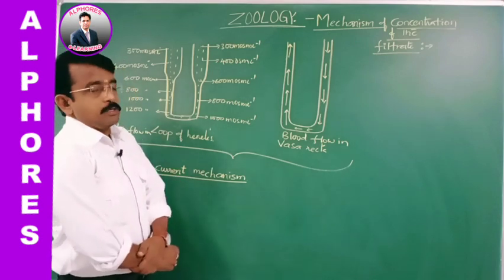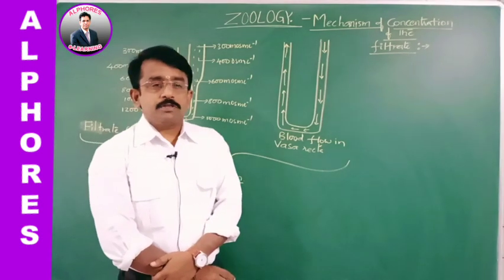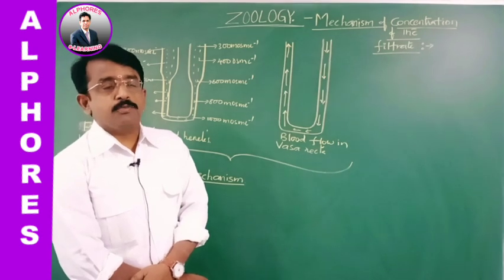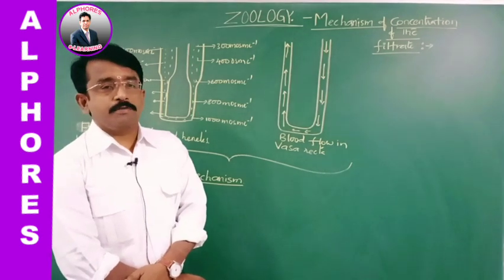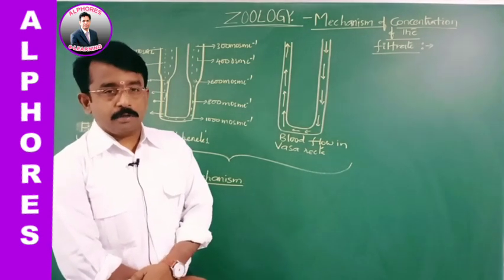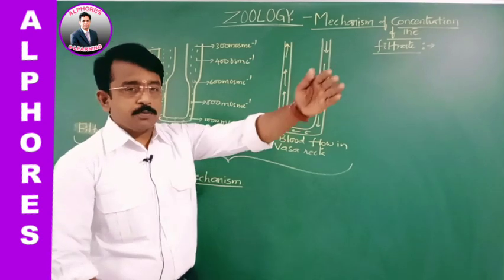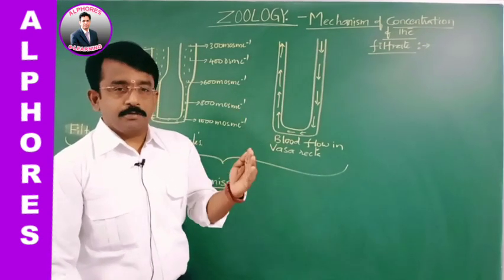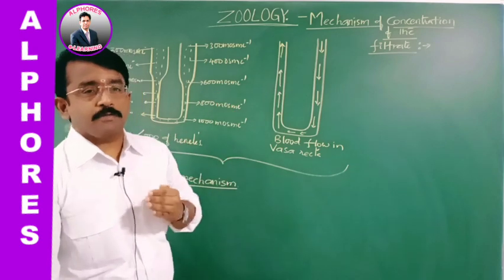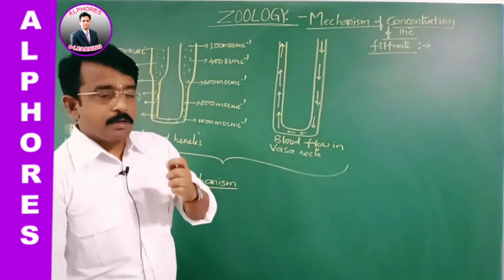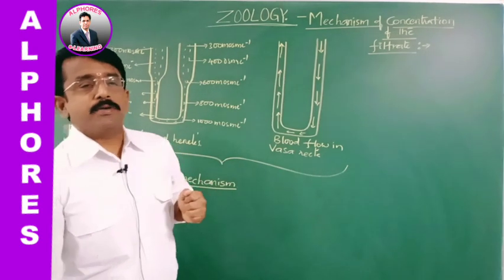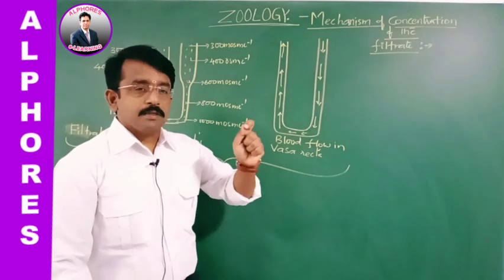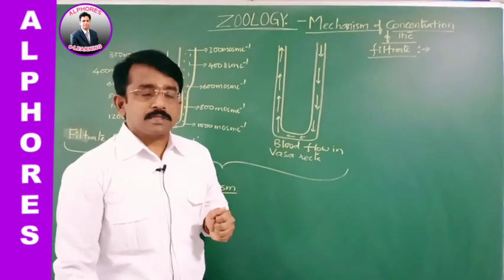So, urine formation — in which reabsorption as well as tubular secretion and glomerular filtration we have seen. Phase-wise: glomerular filtration, selective reabsorption, tubular secretion we have discussed. Now, how hypertonic urine forms is the topic we are going to discuss.